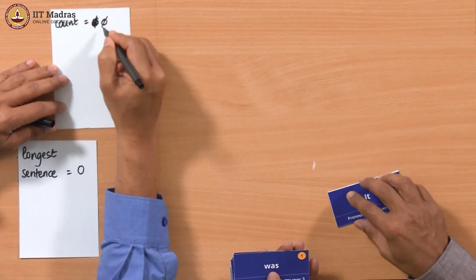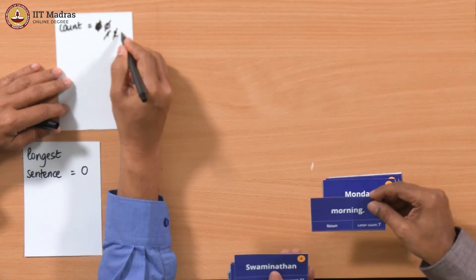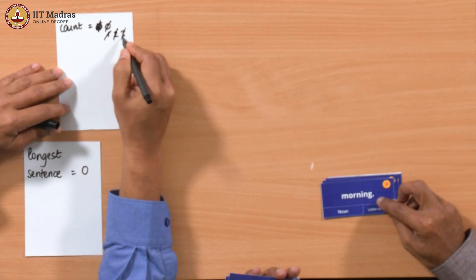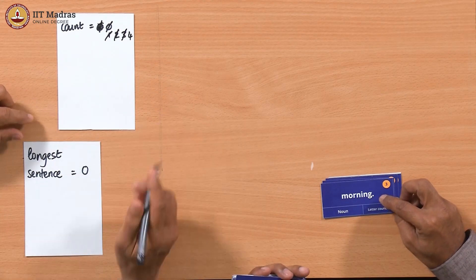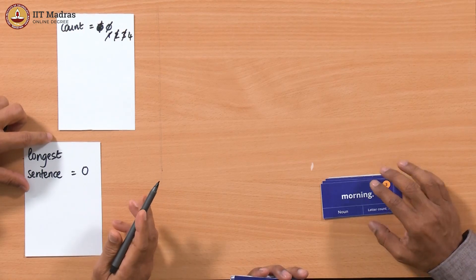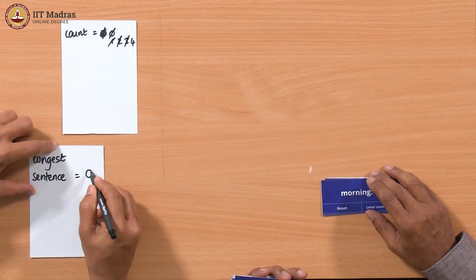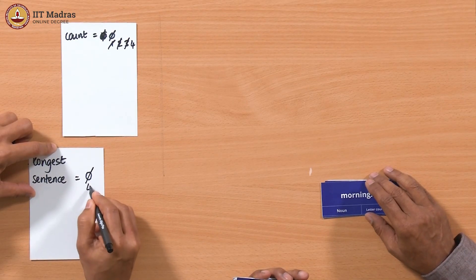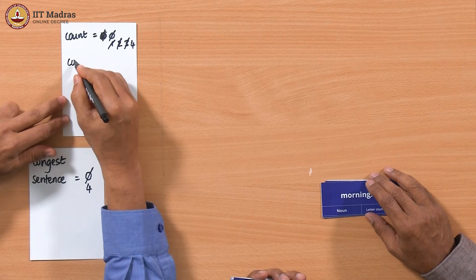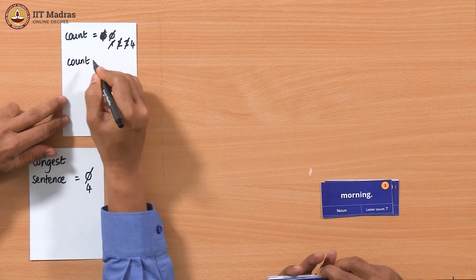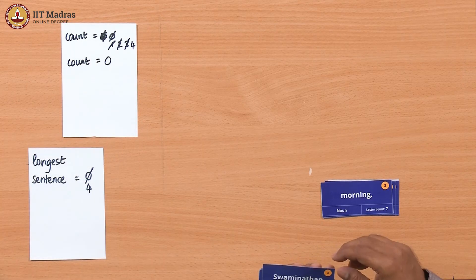We have the first card — 1, second — 2, third — 3, next — this one has a full stop. So our first sentence has four words in it. As far as we know now, this is the longest sentence because our earlier estimate was only 0. So we update — we say the longest sentence has four words. Now, what do we do with count? We have to start again. We cannot continue from four because it is a new sentence. So we discard that earlier value of count and start with count equal to 0 again.